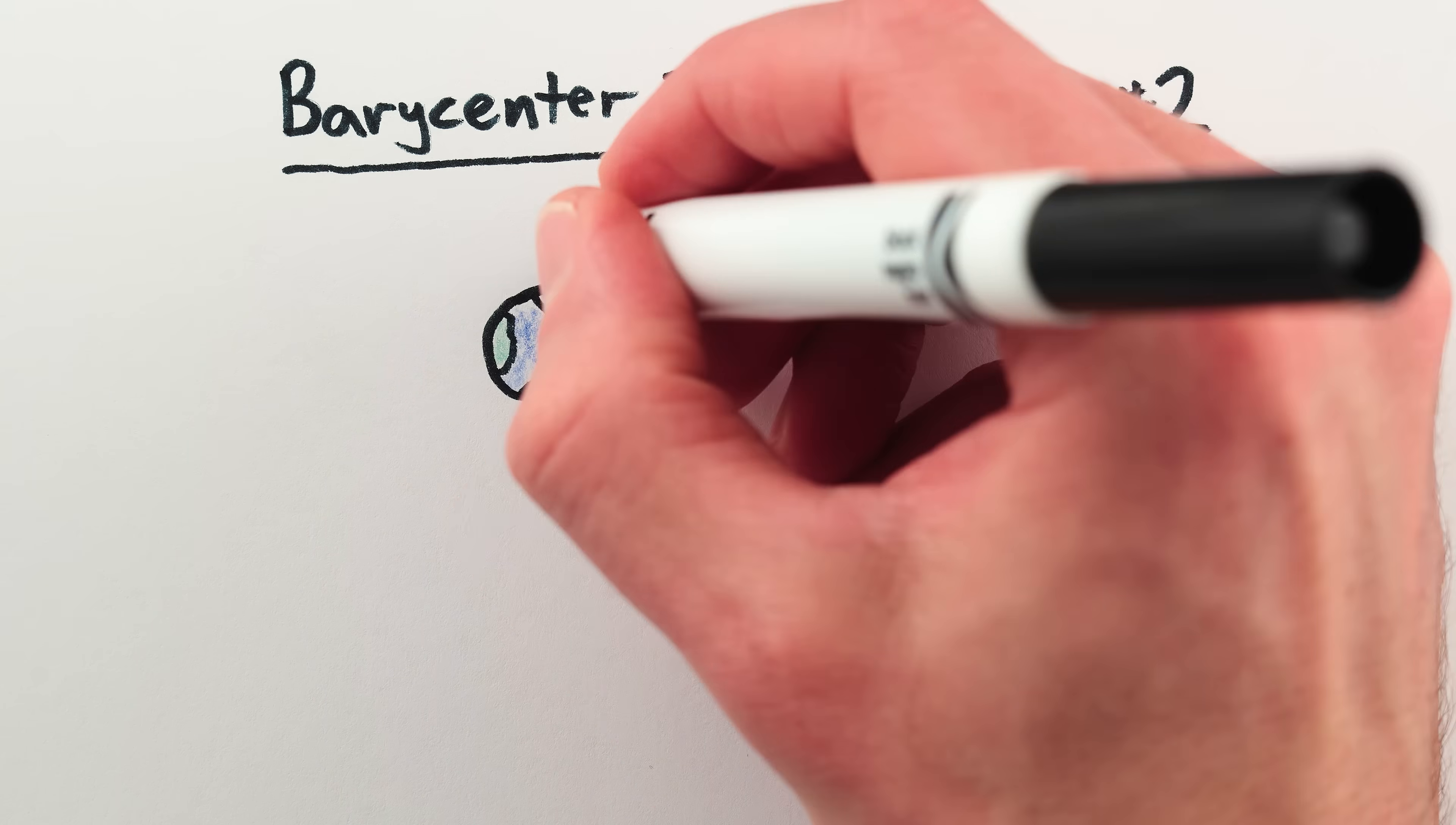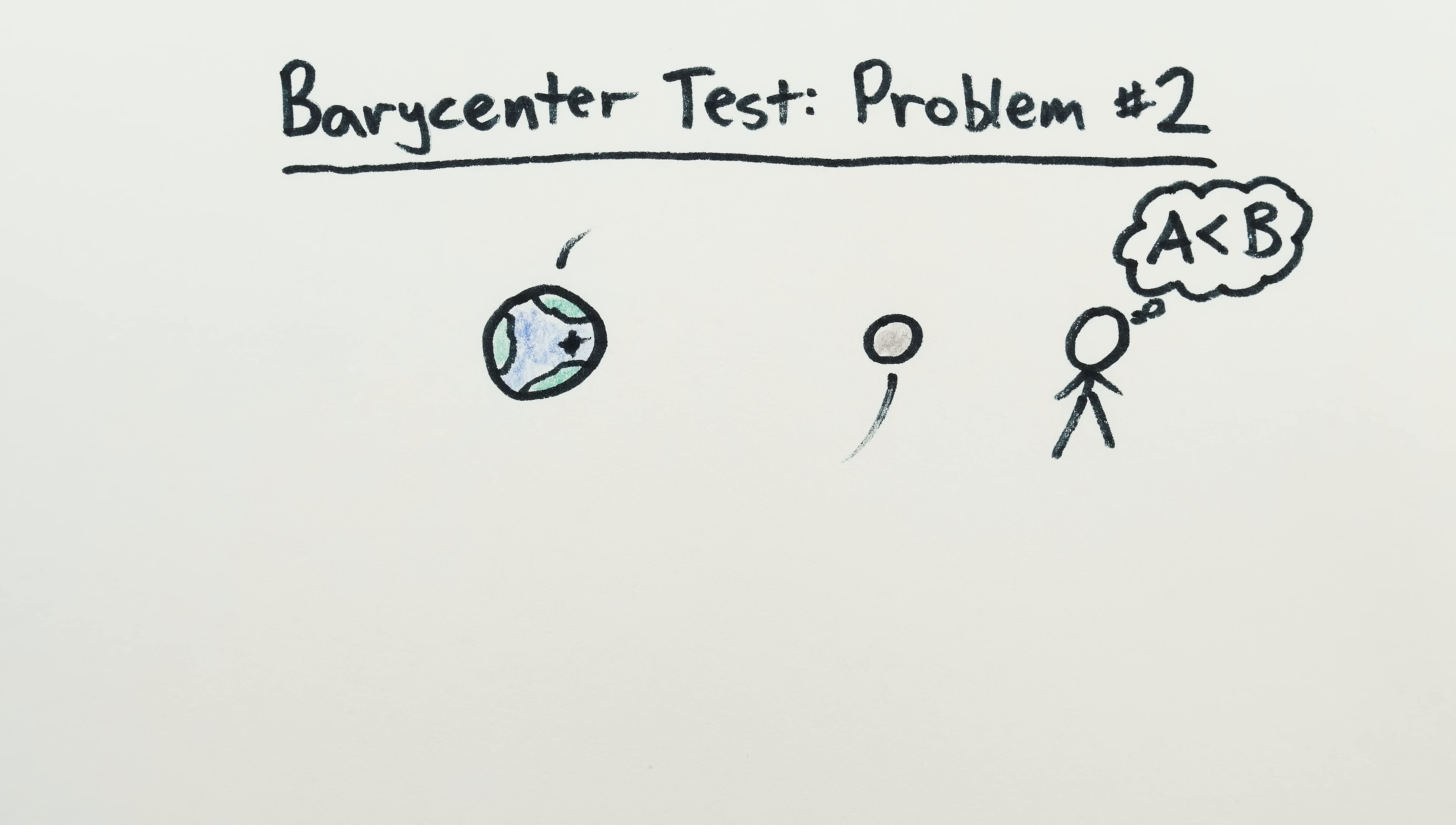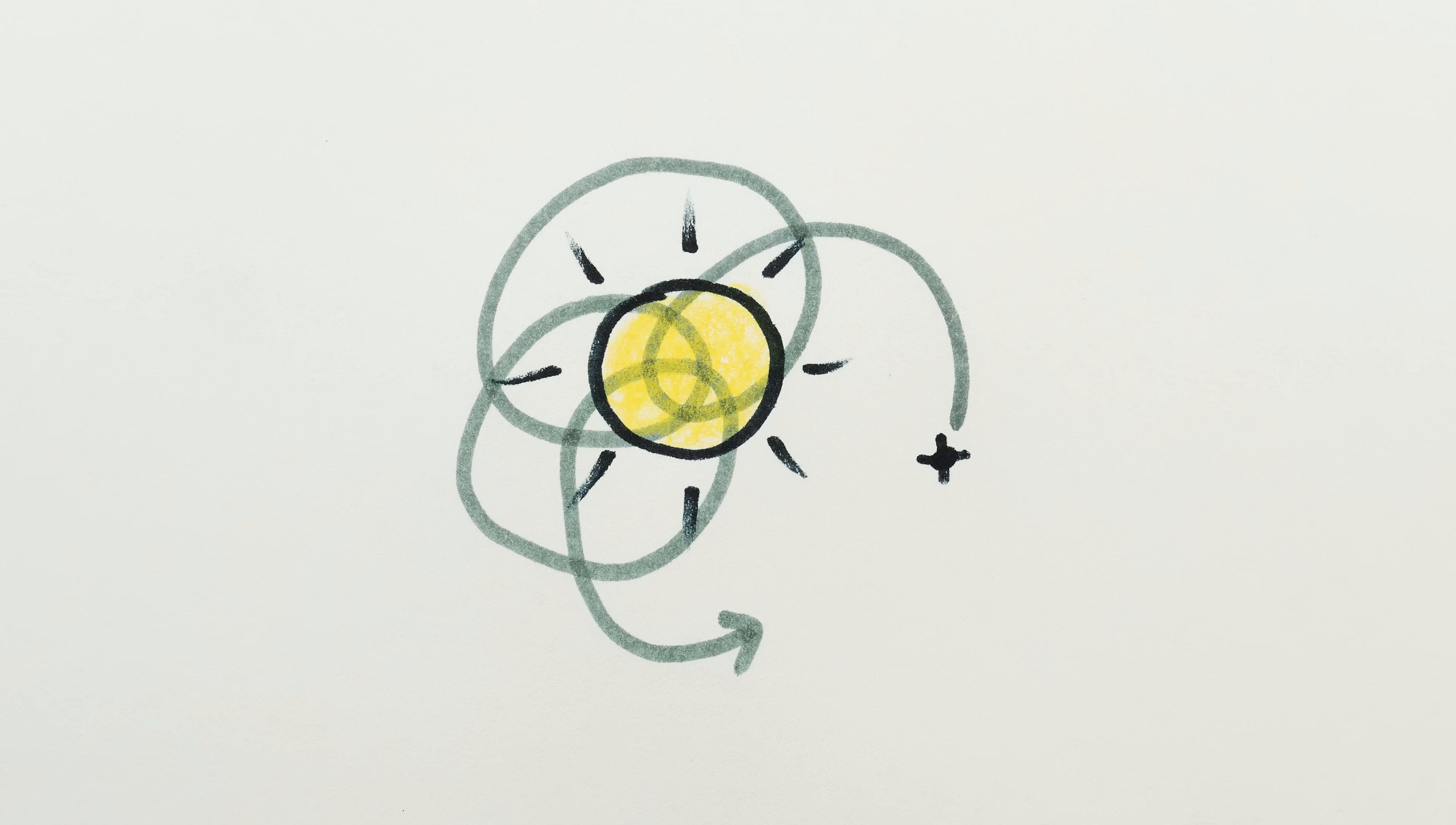The second problem with the barycenter being inside one object criteria is that it's a purely intellectual threshold, not a physical one with physical consequences. There's nothing different that happens when the center of mass of a system moves outside of an object's radius. The barycenter of the solar system regularly moves in and out of the sun, without any effect whatsoever.